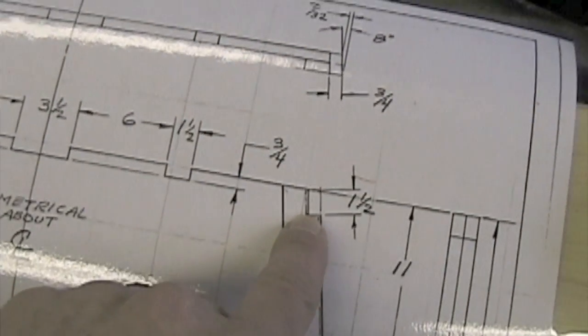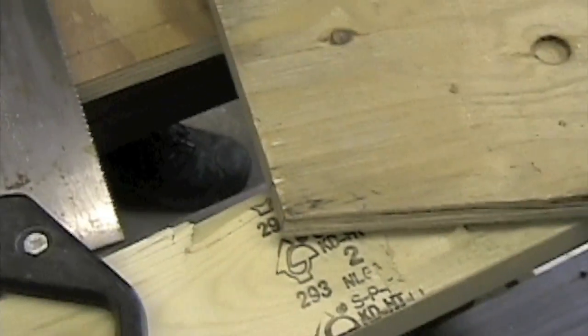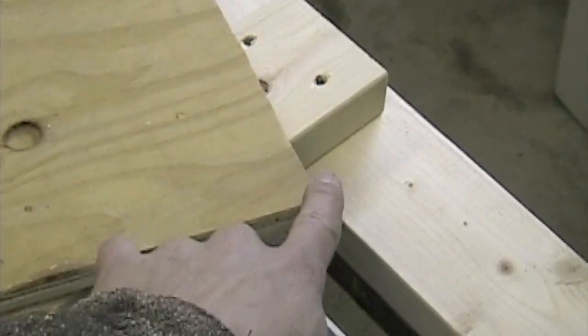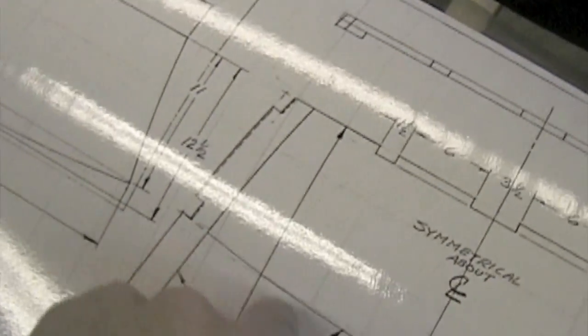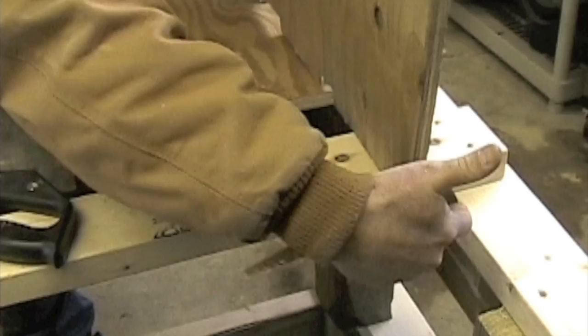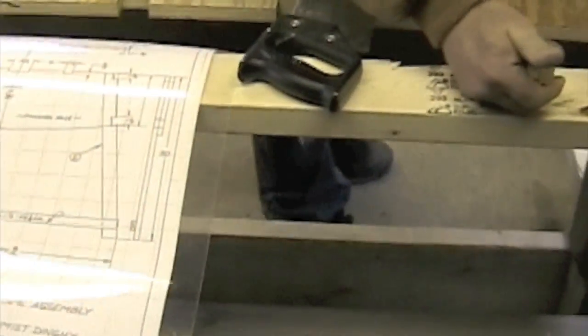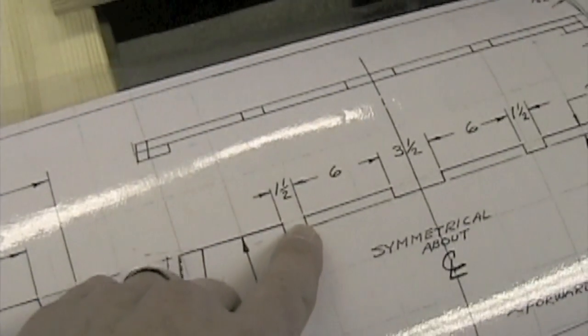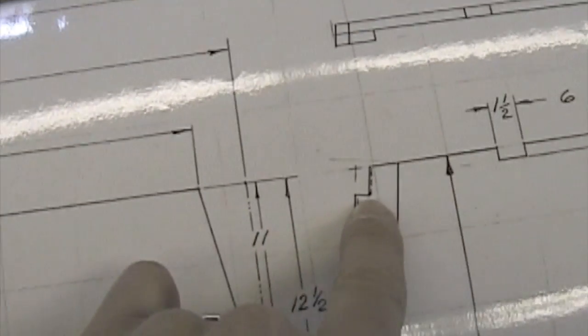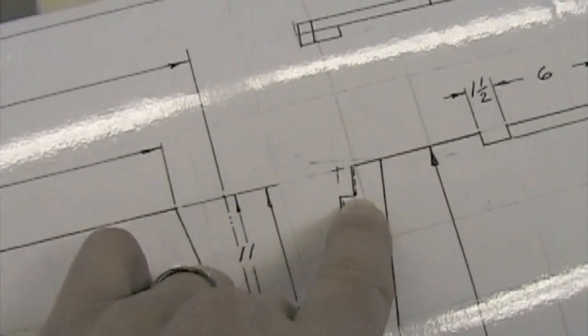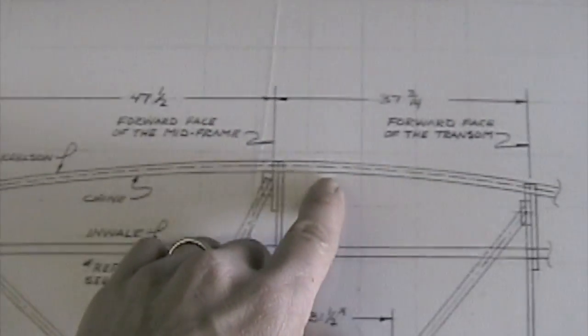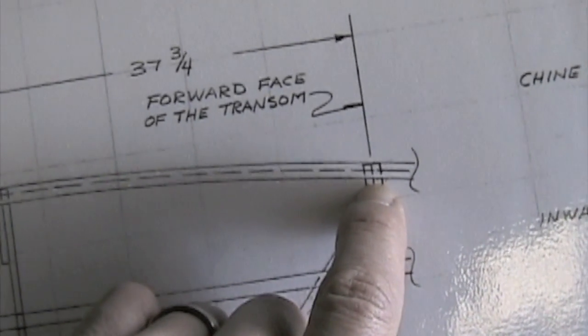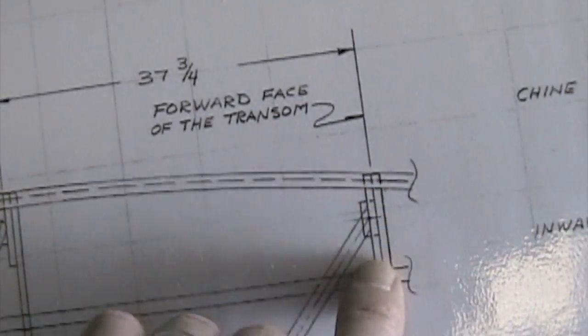We're trying to establish this angle on the transom right now. This back corner here in this upper quarter to it. We've notched this for the keelsons and then we're trying to establish this corner cut right here that has to come in at an angle. Which over here on the big drawing shows that this transom has to accept this keelson at a slight angle here.